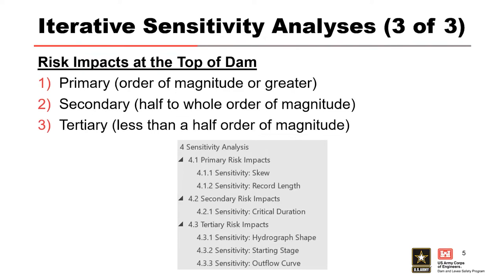On the right is an example of a table of contents for the sensitivity analysis section in an issue evaluation study hydrologic loading curve report. Three categories of risk impacts can be identified: primary, secondary, and tertiary. Primary risk impacts have the potential to alter the probability of overtopping by an order of magnitude or greater. Secondary risk impacts alter it by approximately half an order to a whole order of magnitude. Tertiary risk impacts alter it by less than half an order of magnitude. Categorizing risk impacts this way can help determine which parameters could benefit from additional study to reduce uncertainty.